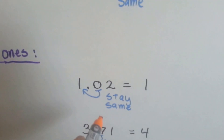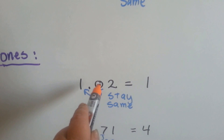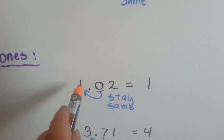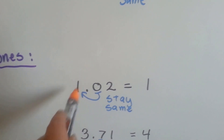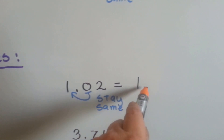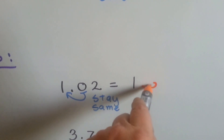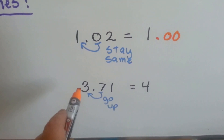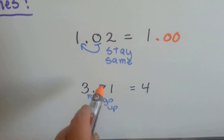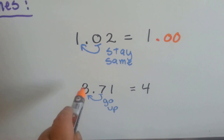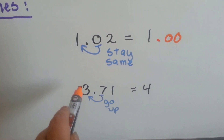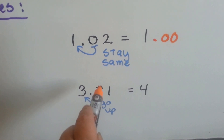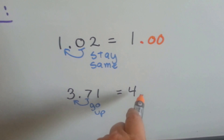In this one, the zero in the tenths place told the one to stay the same, and then it dropped off or turned into zeros. And in this one, the seven told the three to go up to four, so it did, and it dropped off or became zeros.